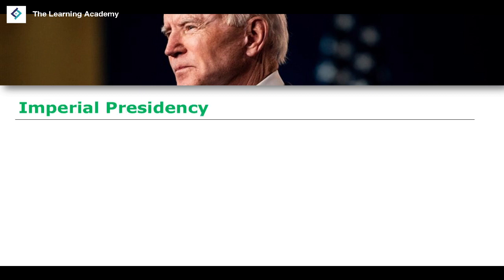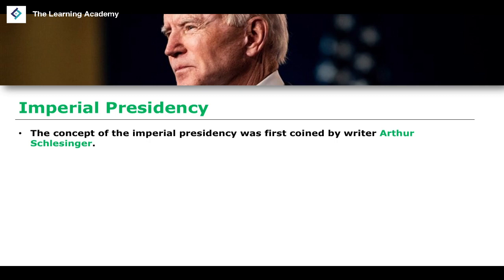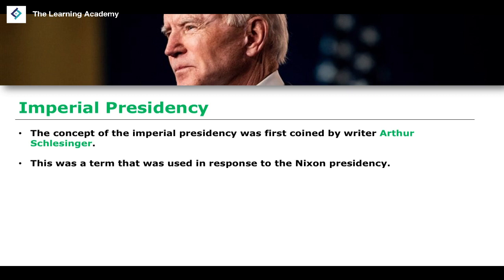Let's begin with the imperial presidency. This concept was first coined in the 1970s by writer Arthur Schlesinger, and it was a term used to describe — or at least was in response to — the Nixon presidency. If you know anything about US history, you'll know that Richard Nixon did a number of controversial things while in office, and this coined phrase was a direct response to the actions taking place under his presidency.